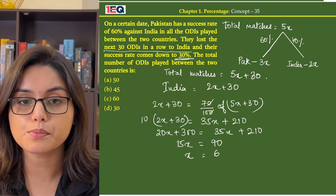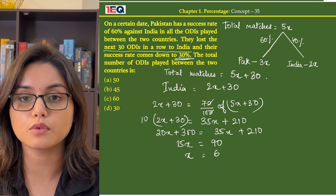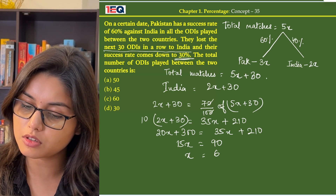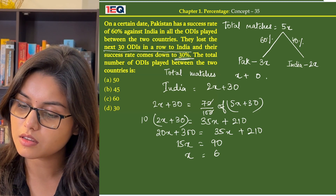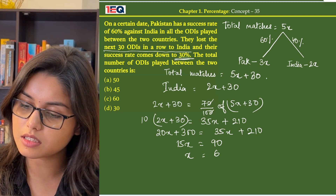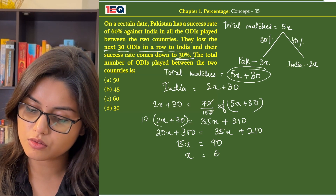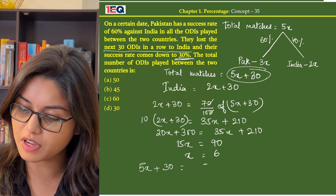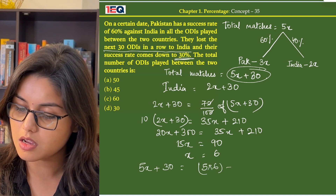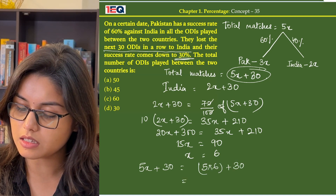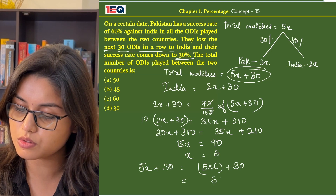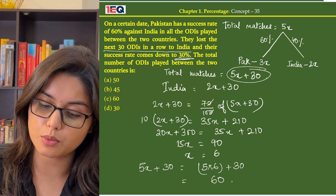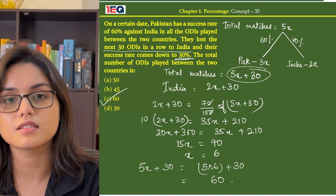Now we need to find the total number of ODIs played between the two countries, which is 5x plus 30. So the total number of ODIs will be 5 into 6 plus 30, that is 30 plus 30 equal to 60. So the answer to this question is option C, that is 60.